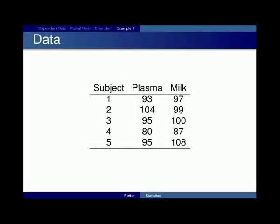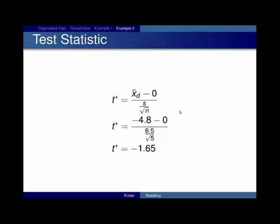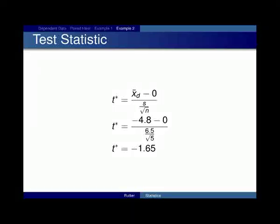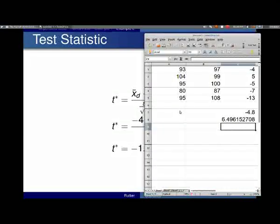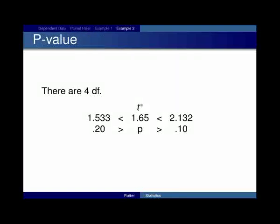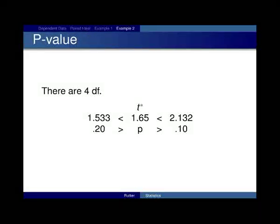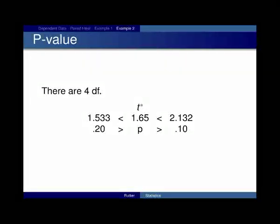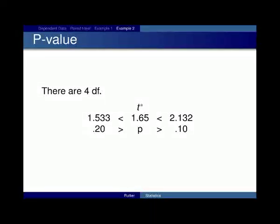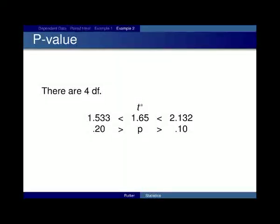So, go back to the presentation. There's our test statistic. Again, negative 4.8 minus 0 because the null hypothesis is always equal to 0 in some fashion. 6.5 divided by the square root of 5. There's our test statistic. There are 4 degrees of freedom because we had 5 samples. And so, you can bracket the p-value like we've been doing before. You look in the 4 degrees of freedom row: 1.53 and 2.13 bracket 1.65.